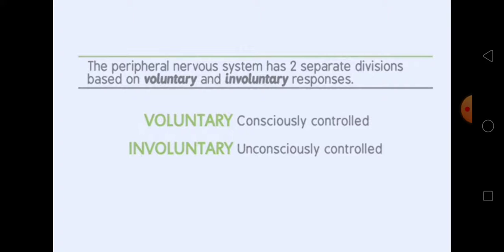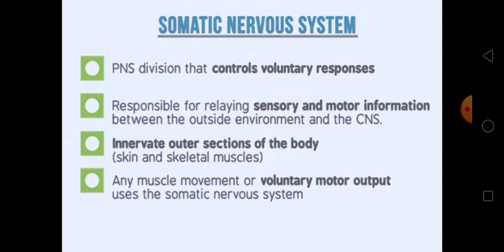Next, we will discuss the peripheral nervous system. The PNS has two separate divisions based on voluntary and involuntary responses. Voluntary responses are consciously controlled, while involuntary responses are unconsciously controlled. If you want to learn about the somatic nervous system, please wait for the next video. Thanks for watching.